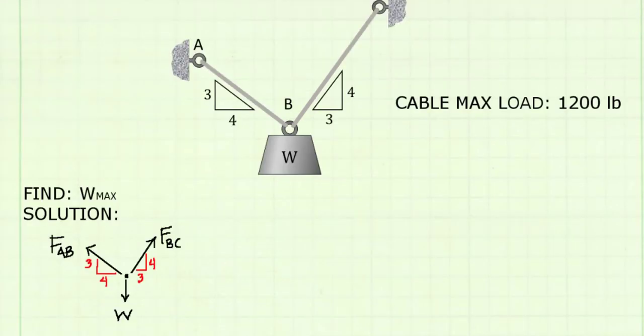Now I've got my free body diagram drawn. I show all three forces acting: the two cables, AB and BC, and the weight, and the orientations of the forces in the cables. I've also shown the direction. In this case, all forces acting in tension away from point B.